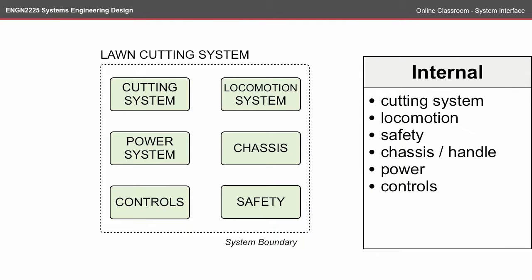When we apply that to the system interface, we have the lawn cutting system as a series of subsystems. We have the cutting system, the locomotion subsystem, the power subsystem, the chassis, the controls, and the safety subsystems.